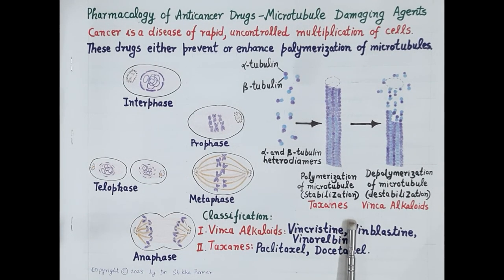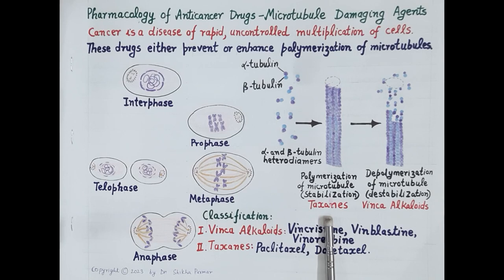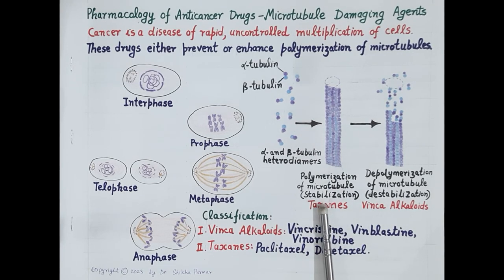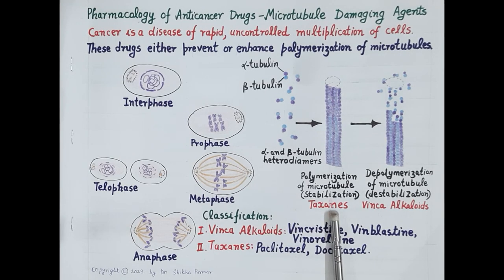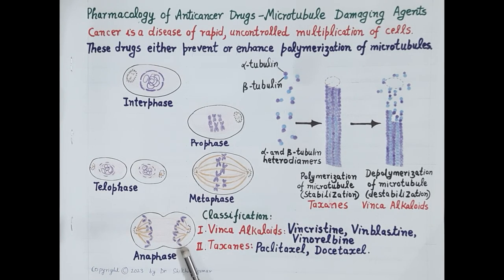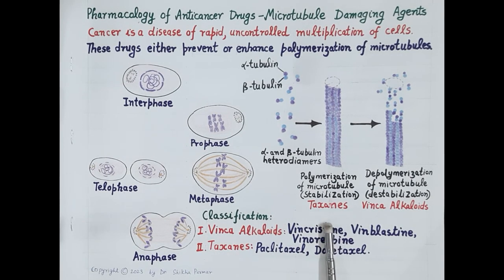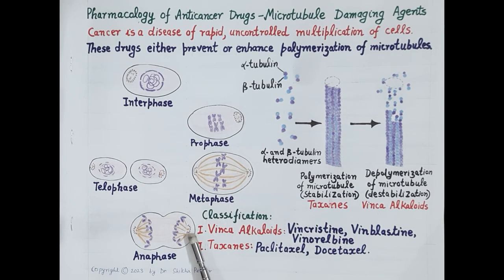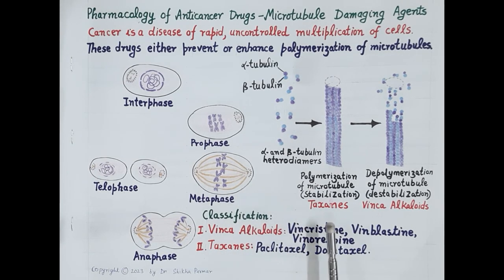Microtubule damaging agents are of two types. Drugs belonging to the class taxanes enhance polymerization of microtubules and cause stabilization of the polymerized microtubules — meaning the polymerized state of spindle fibers is stabilized. Microtubules cannot depolymerize, so spindle fibers cannot shorten, and this prevents the separation of sister chromatids. The cell cannot move from metaphase to anaphase; thus mitosis is arrested at metaphase and the cell cannot divide.